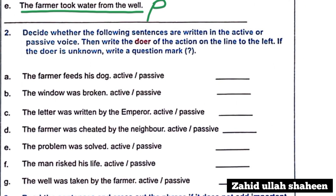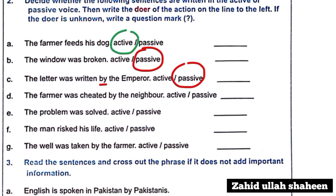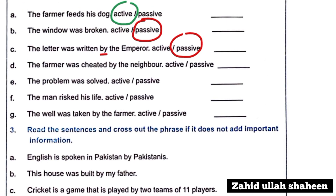'The farmer fed his dog' — active voice. 'The farmer was cheated by the neighbor' — passive voice. 'The problem was solved' — passive voice. 'The man risked his life' — active voice. 'The grain was taken by the farmer' — passive voice.